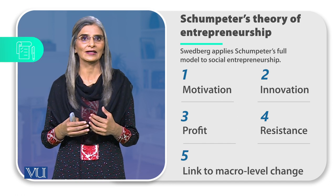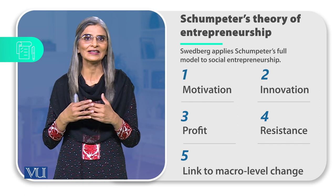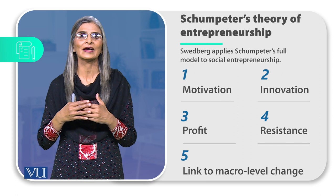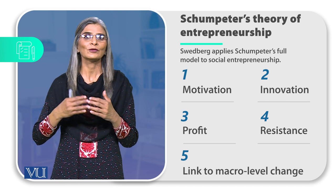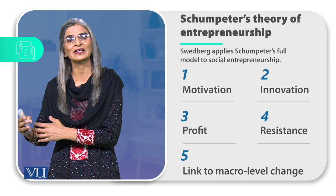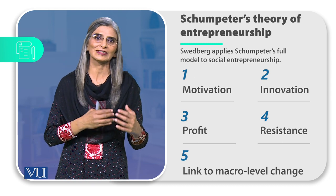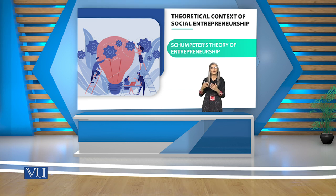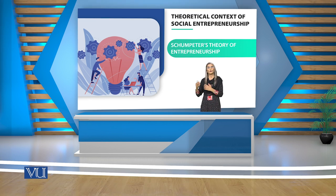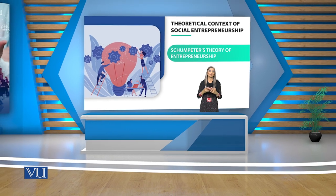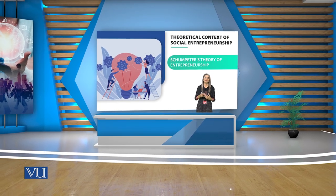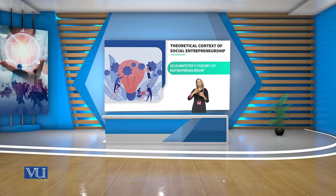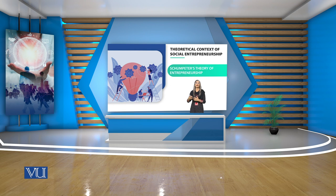Social entrepreneur کے لیے ضروری ہے کہ جو change وہ اپنے enterprise کے ذریعے لا رہا ہے اسے broader societal change کے ساتھ link کرے، تاکہ معاشرے کا structure ہمیشہ کے لیے بدل جائے اور change process رک نہ جائے یا reverse نہ ہو۔ Social entrepreneurship سے آنے والی social change اسی وقت sustainable ہوگی جب وہ broader societal norms، values، structures اور institutions کا حصہ بن جائے — اس طرح social entrepreneurship entrepreneurship کا ایک نیا economic model theorize کرتی ہے۔ Thank you.